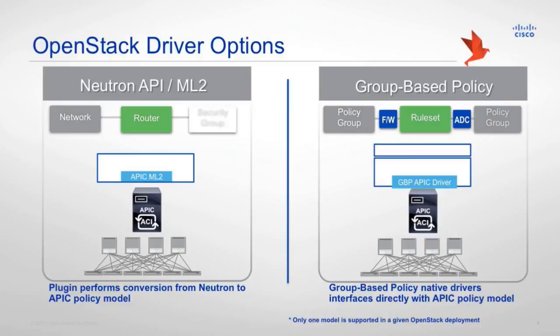For those that are really invested in ACI, you might want to consider the GBP — the Group Based Policy Driver. This does offer more of a one-to-one mapping. We have rule sets which equate to policies and contracts, and there's no conversion there. Note that only one model can be used per OpenStack environment — you can't use both the ML2 and the GBP driver in one OpenStack environment.